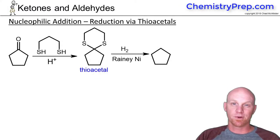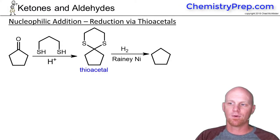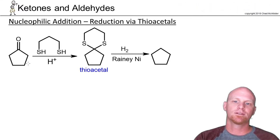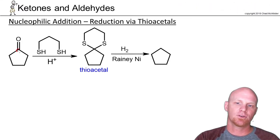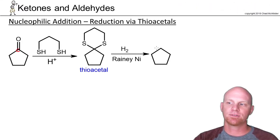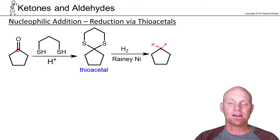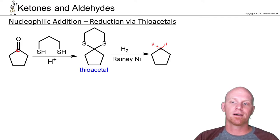Since we just talked about the Wolff-Kishner reduction, we'll talk about a reaction that carries out exactly the same result. We can take a ketone or aldehyde and completely reduce the carbonyl, replacing the oxygen with two hydrogens. So same thing that the Clemmensen and Wolff-Kishner reductions do — we've just got another tool in our tool bag that will accomplish it.